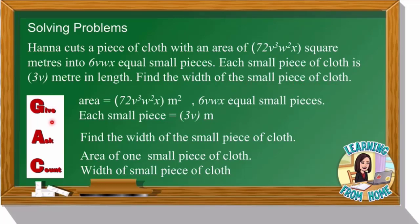Following the three simple steps — give, ask, and count — the information given is: the total area is 72v³w²x², cut into 6vwx equal small pieces, and each small piece has a length of 3v meters. We need to find the width. To do this, we first find the area of one small piece of cloth, then use it to find the width.